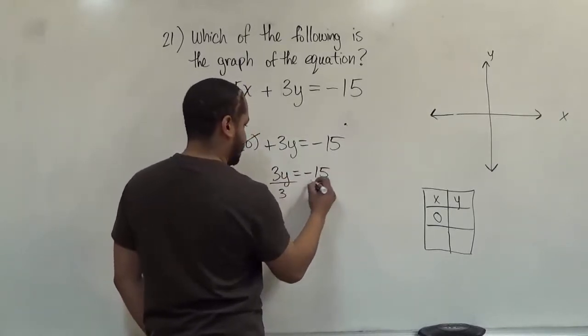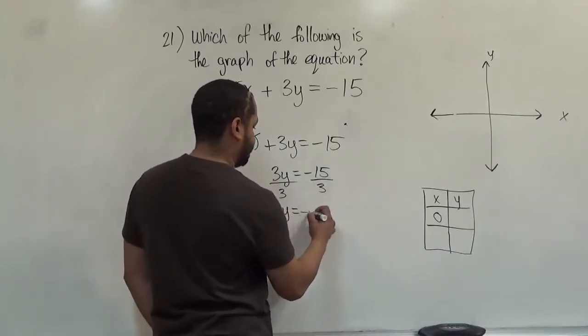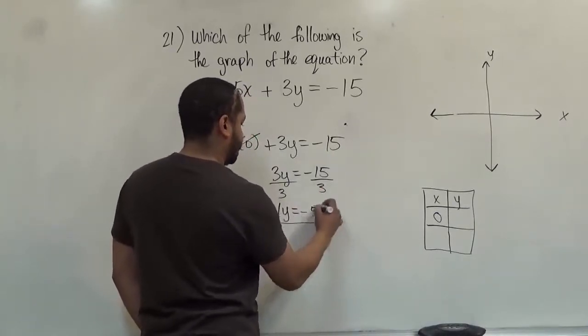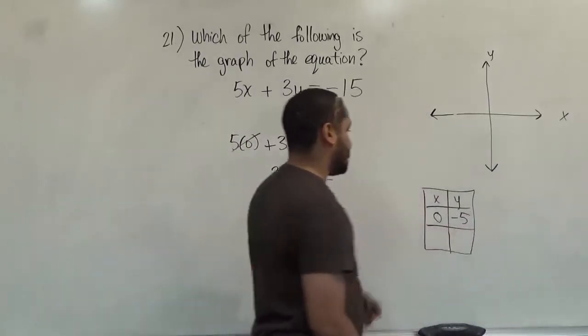Here these are going to cancel out the 0 and I get 3y equals negative 15. I divide both sides by 3 and I solve for my y, which is negative 5. When x is 0, y is negative 5. Here's my first coordinate.